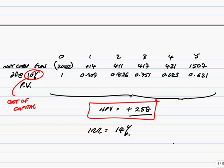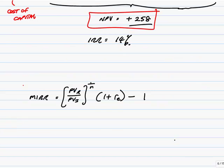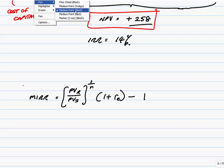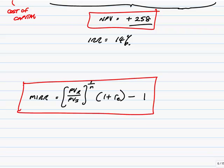Well, the examiner suggested that there's an alternative way of looking at the internal rate of return. Which I'll say is much, much quicker, and to an extent solves those problems. It's called the modified internal rate of return, and you're given the formula for it on the formula sheet. It's printed on page 49 of the notes.